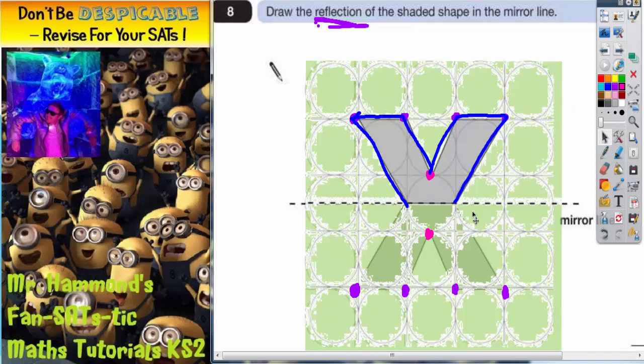So you can either do it by counting squares from each corner and making that number of squares the same on both sides of the mirror line, or you can do it by tracing the shape and then flipping it over. Flipping it over is not the same as rotating. It has to be flipped over. Obviously, check your answer with your mirror.